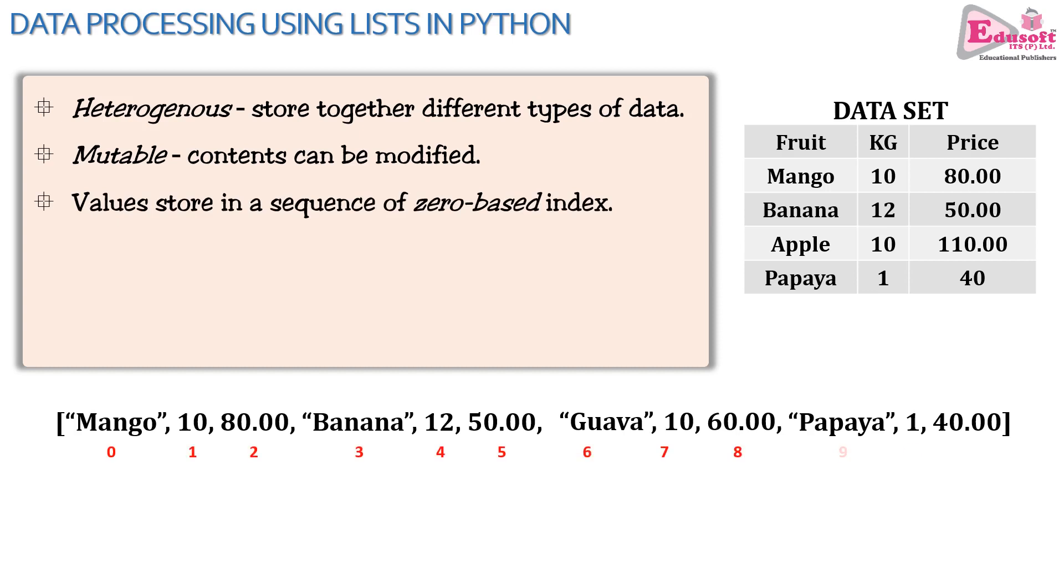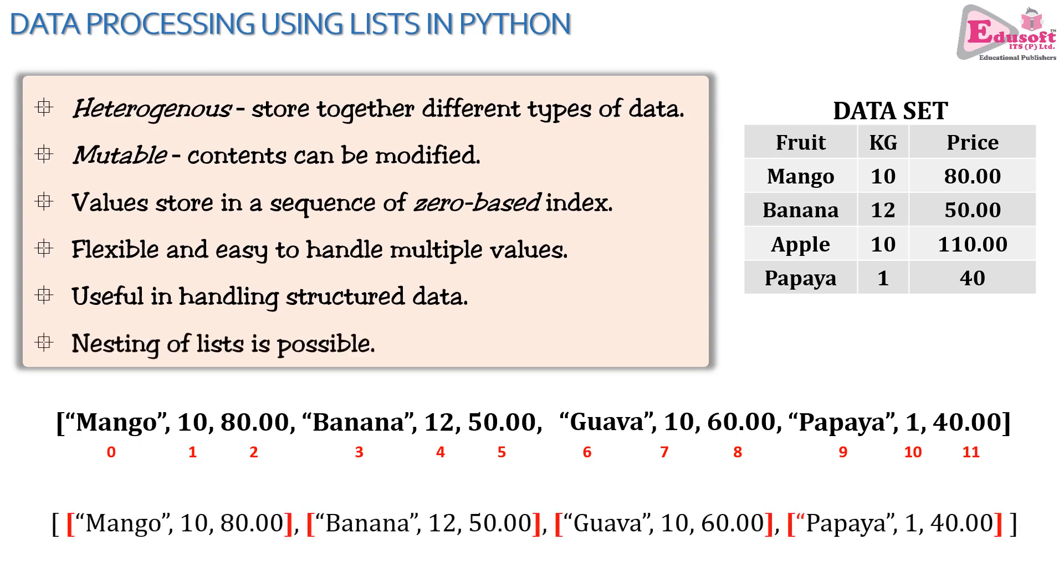The values which are stored in the list are accessed by a zero-based index. That means the first value in the list will be considered to be at the index zero and so on. Lists are very flexible and easy to handle. Lists are very useful in handling structured data, meaning data which has a well-formed structure like rows and columns. A list can store another list within itself, so there may be scenarios where you will find multiple lists held inside another list. Such lists are called nested lists.